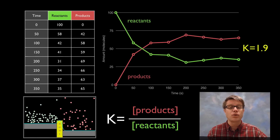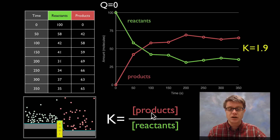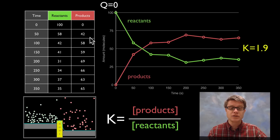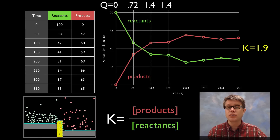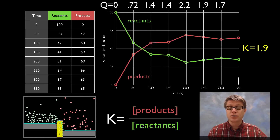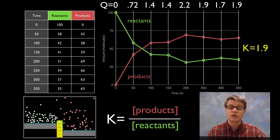Q is the values along the way before we reach equilibrium. At that first point, Q is zero — I took the number of products (0) divided by reactants (100). At 50 seconds, Q is 0.42 divided by 0.58, giving 0.72. As we move closer to equilibrium, Q stabilizes, overshoots slightly, and then eventually approaches and becomes K. Q and K are exactly the same thing at equilibrium. K is what we have at the end and Q is what we have along the way.